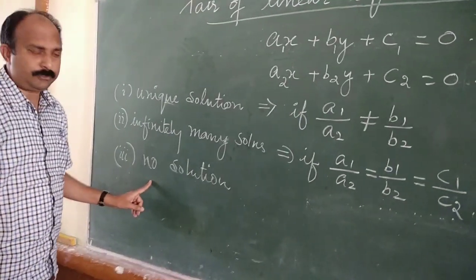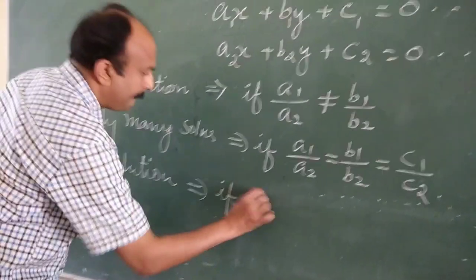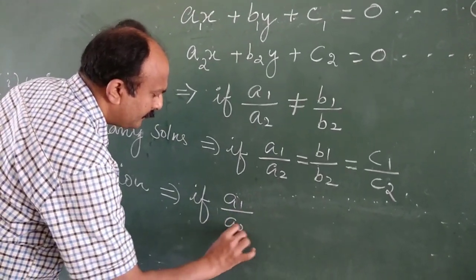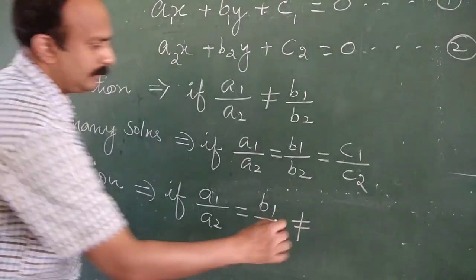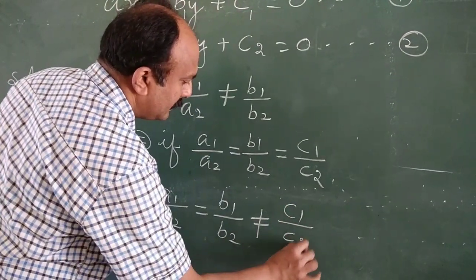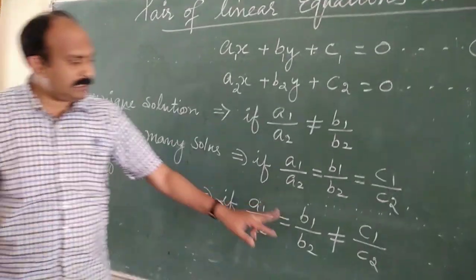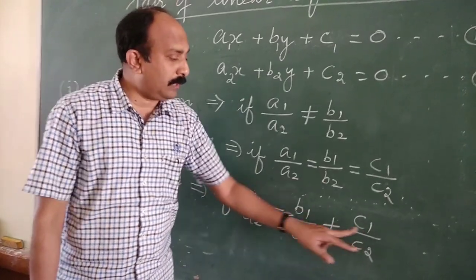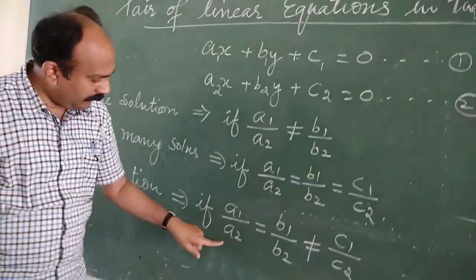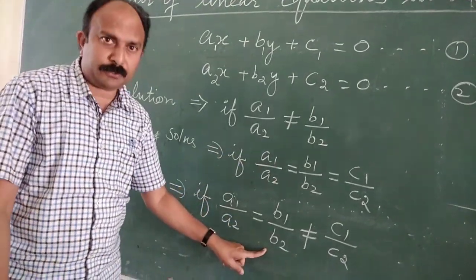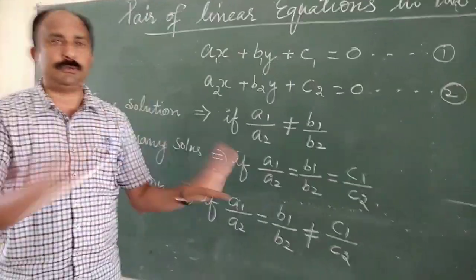Coming to the third one: no solution. The condition is, if a1 upon a2 is equal to b1 upon b2, but not equal to c1 upon c2, then the system will have no solution.